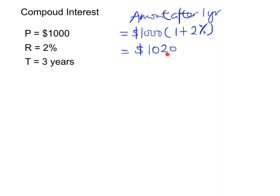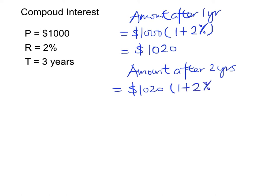We can easily see that in the second year, the principal is $20 more than the principal in the first year. Now we apply the same formula again to find the amount after two years. This will be the principal after one year, which is $1,020, times (1 plus 2%) again. So the answer is $1,040.40. And again, this amount after two years will be the principal for the third year.